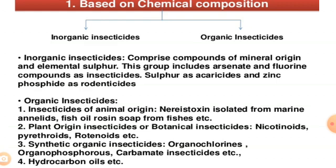Inorganic insecticides generally act as stomach poisons. Important examples include lead arsenate, calcium arsenate, Paris green, and fluorides. Inorganic insecticides comprise compounds of mineral origins and elements such as sulphur. This group includes arsenate and fluorine compounds as insecticides, sulphur as acaricides, and zinc phosphides as rodenticides.